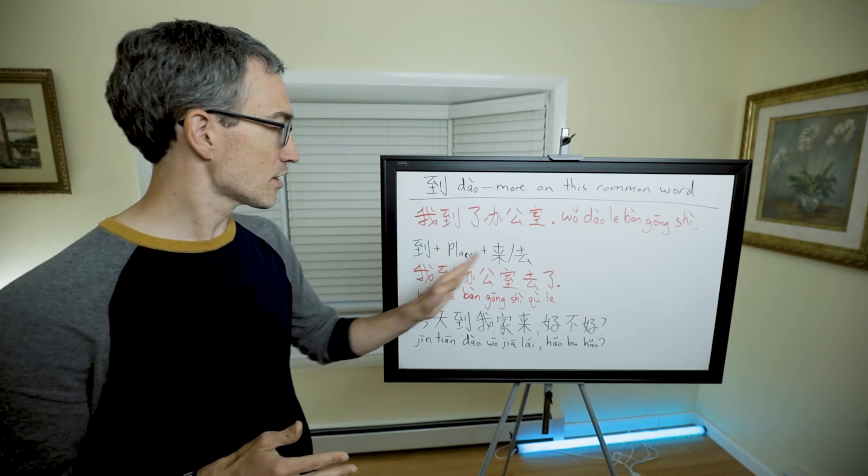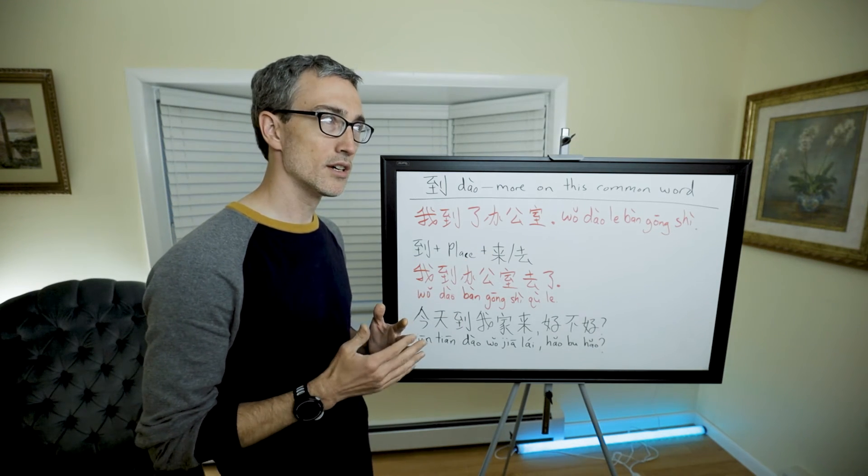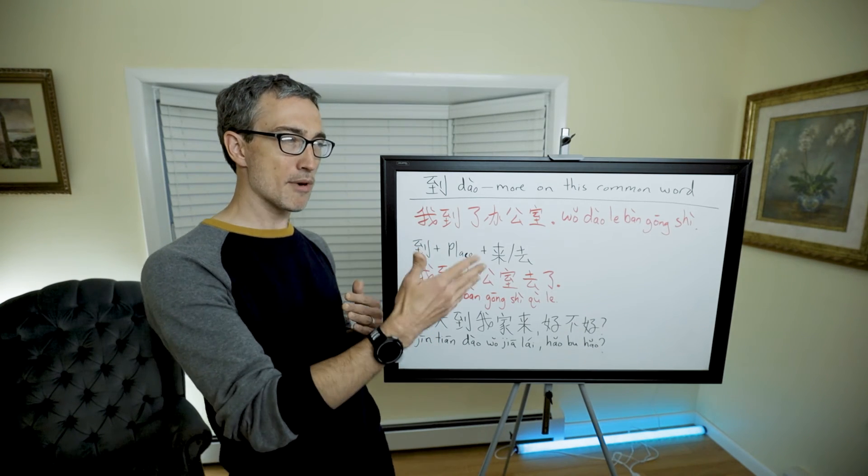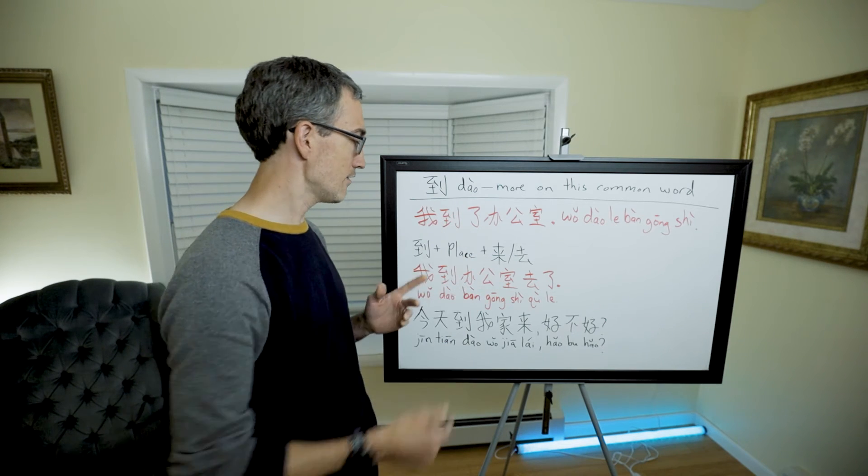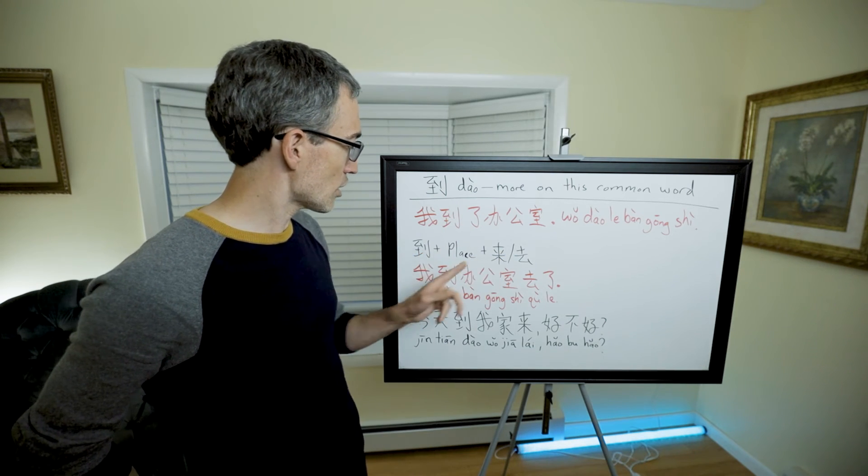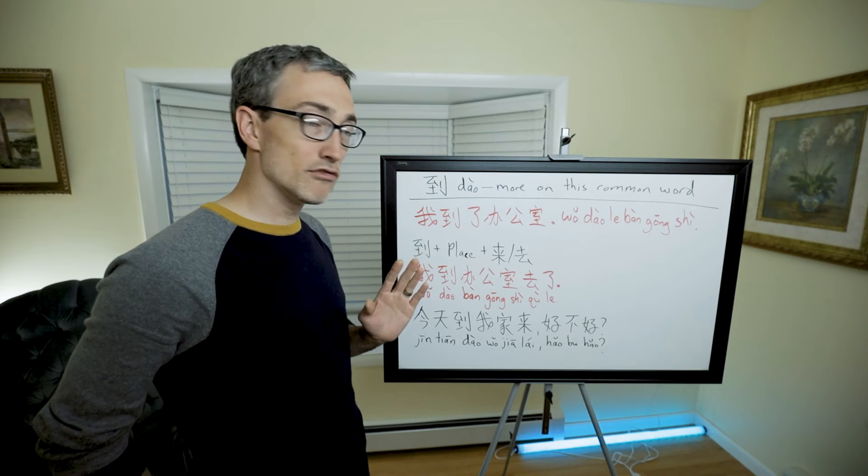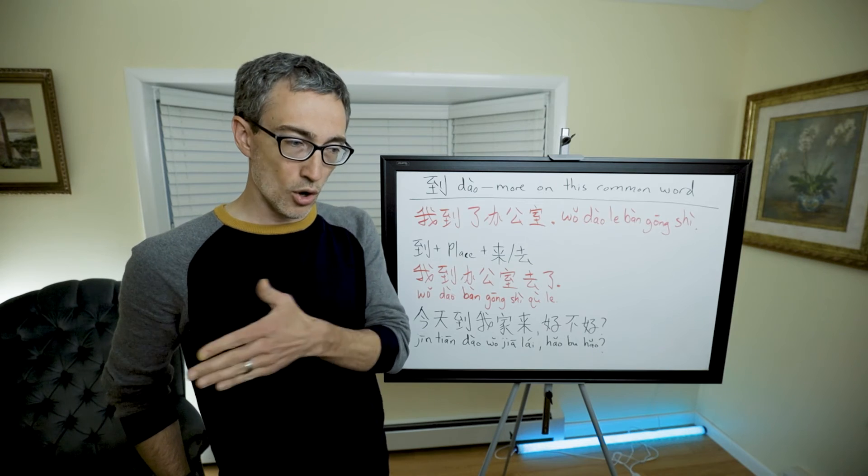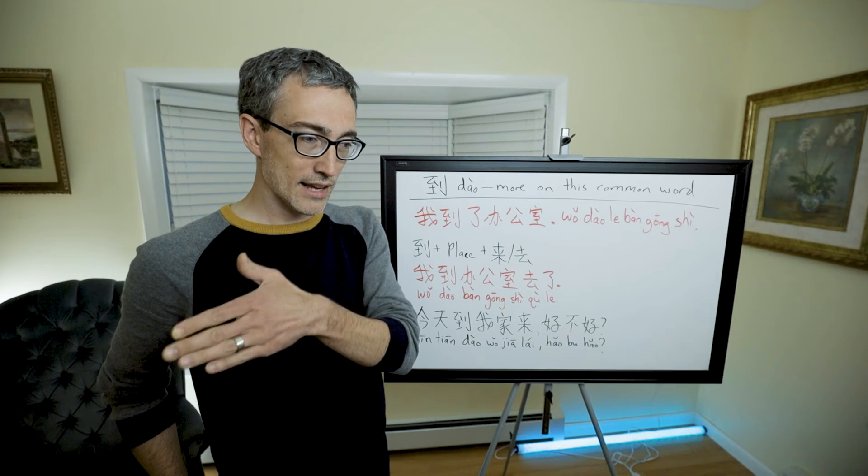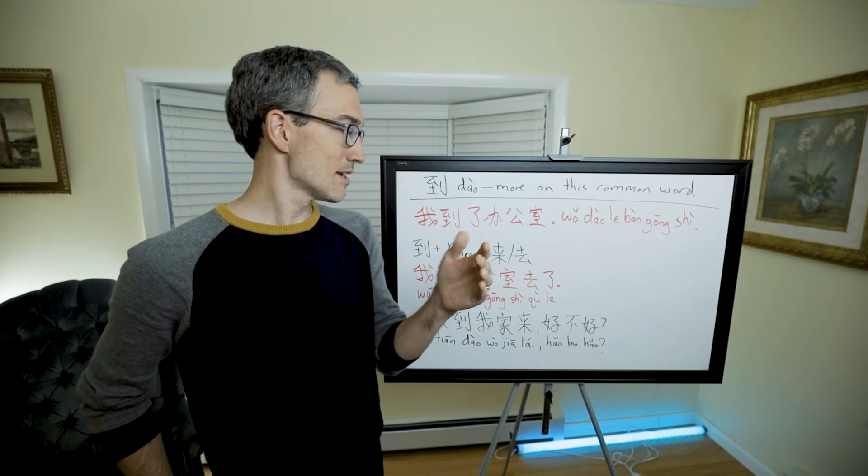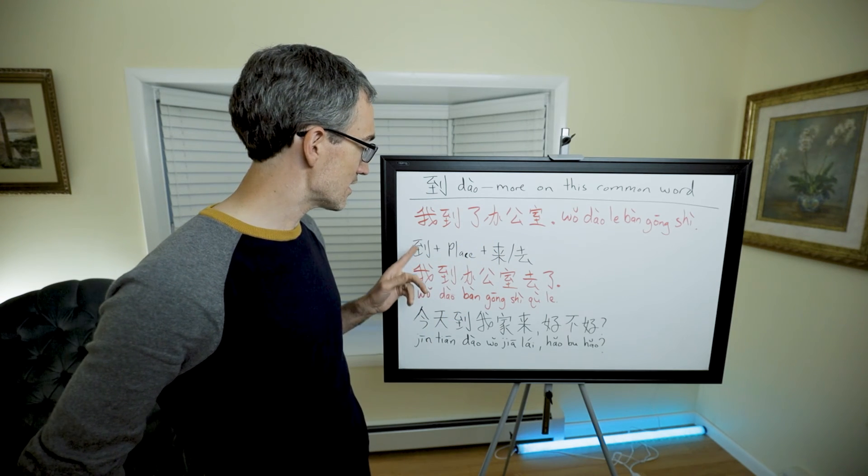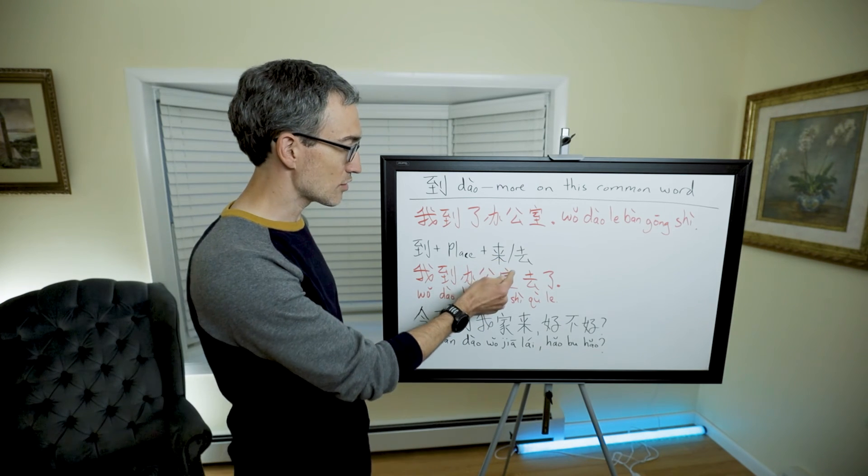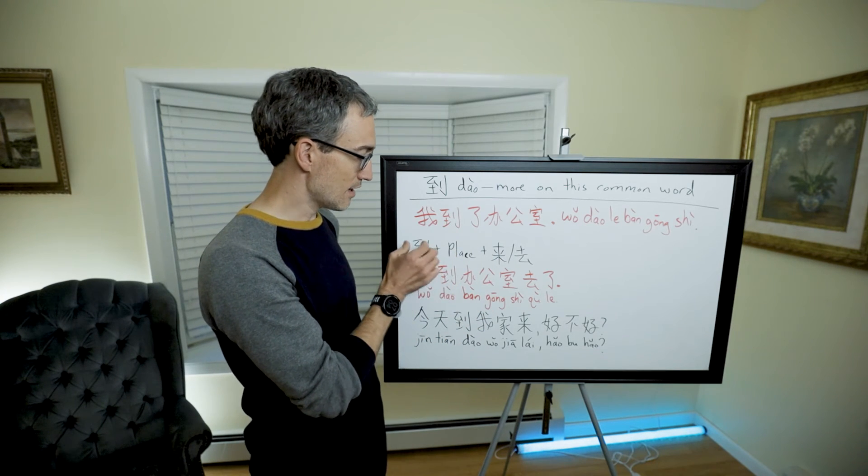But there is another construction that's something you kind of have to learn. It really just means to go or come, but it's a different way to say it. Usually you say 去 place or 来 place, but this is another way: 到 place 来/去. The 来/去 comes after the place, so it's 到 place 来/去.